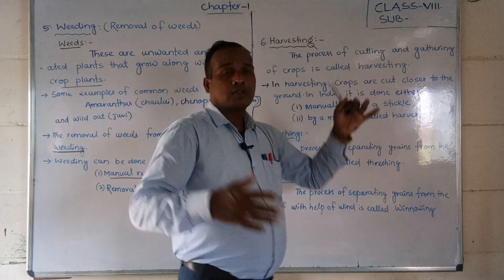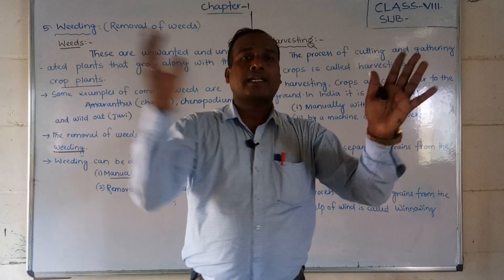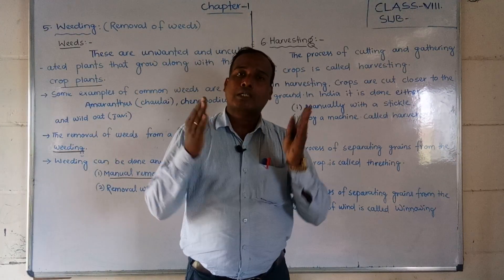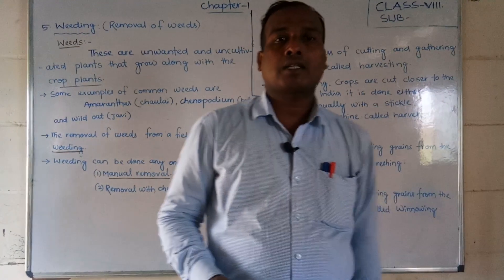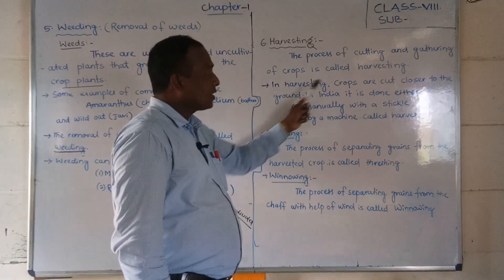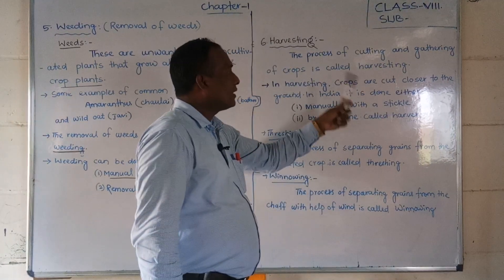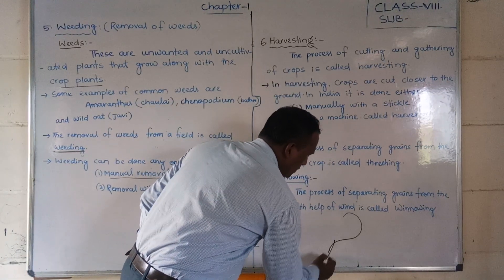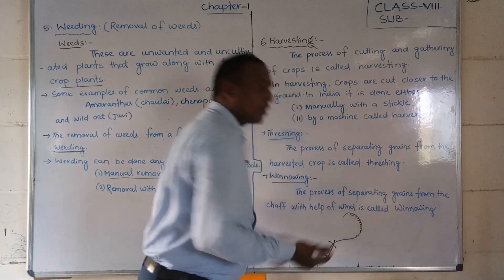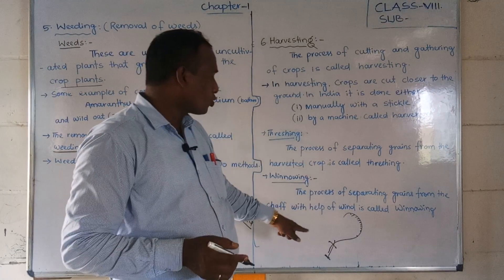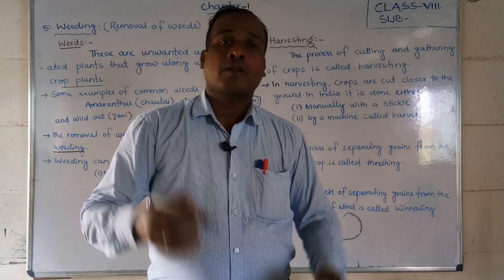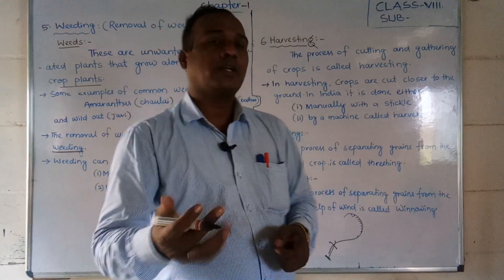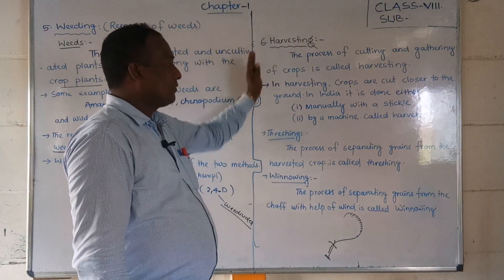The process of cutting and gathering the crops is called harvesting — not only cutting, but also gathering all crops in one place. In harvesting, crops are cut closer to the ground. In India it is done either manually with a sickle, or by machine called a harvester. The farmer cuts and gathers the crops in the field.